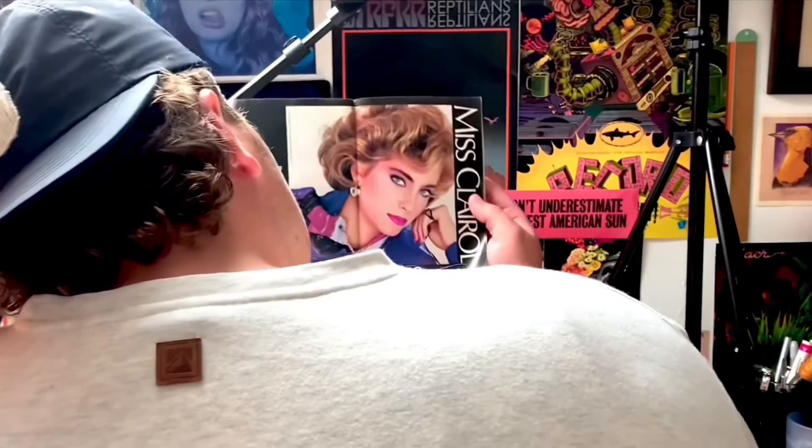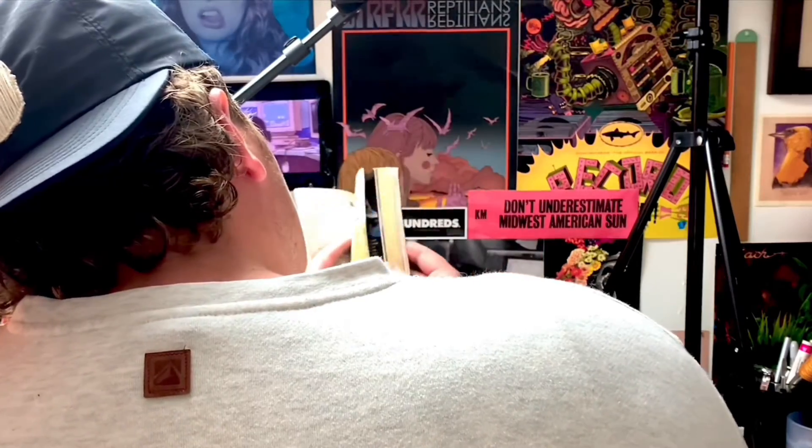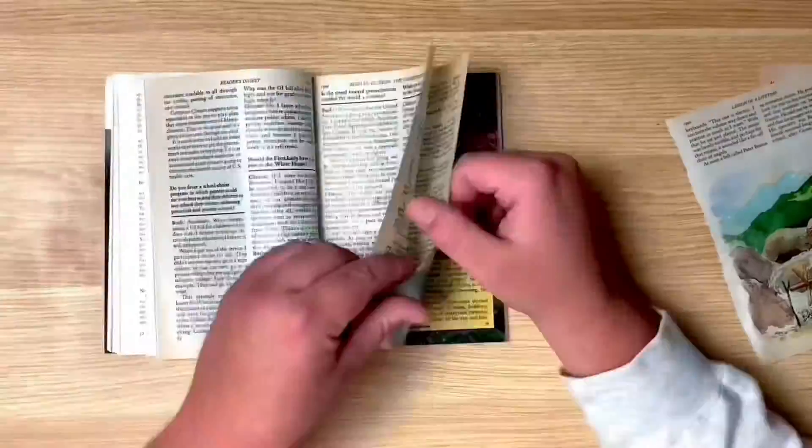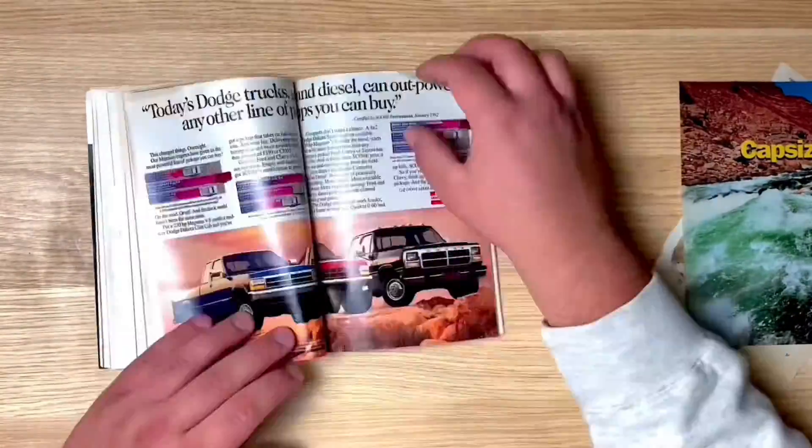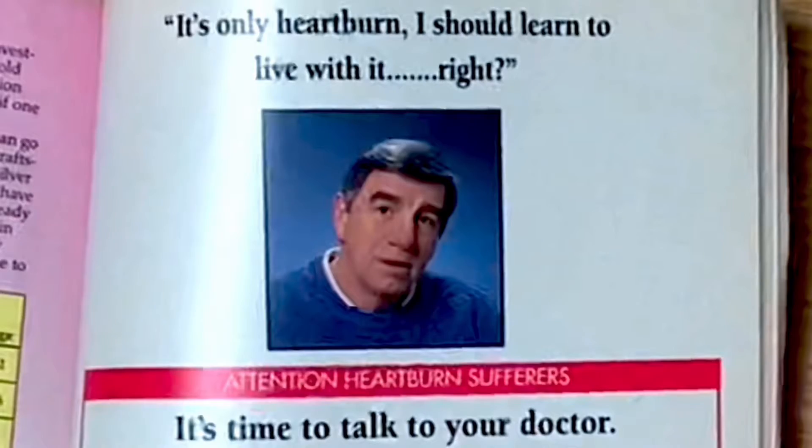So I got these Reader's Digest magazines and I started flipping through them to find any cool pictures that I could put in these frames, but I didn't really find anything besides this creepy doll and I'm pretty sure that's Kramer from Seinfeld.